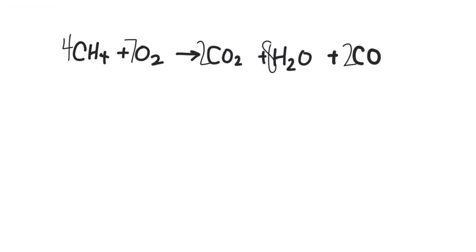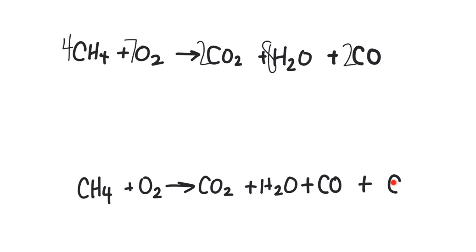These do take a bit of patience to balance, and if you want to review balancing just watch the lesson on balancing chemical equations. That's one way people write an incomplete reaction. The other type also includes carbon to represent the soot that's produced. For that version, we put a 4 and a 6, then an 8 in front of the water and a 2 in front of the carbon monoxide to get everything balanced. And that covers complete and incomplete combustion reactions.